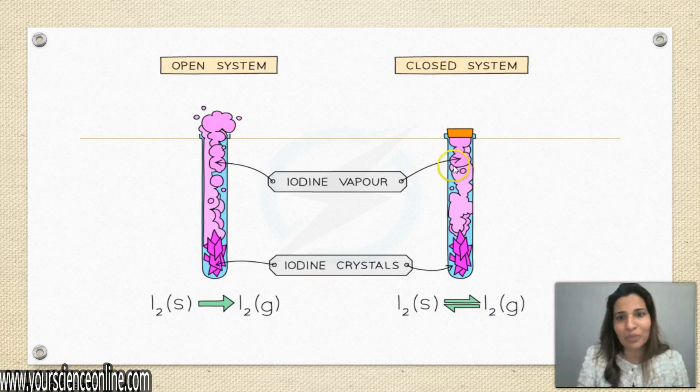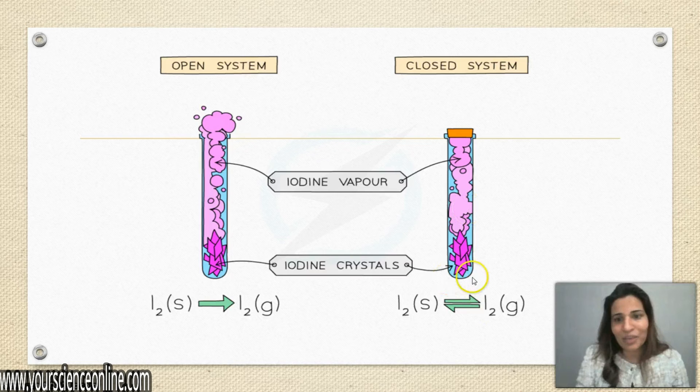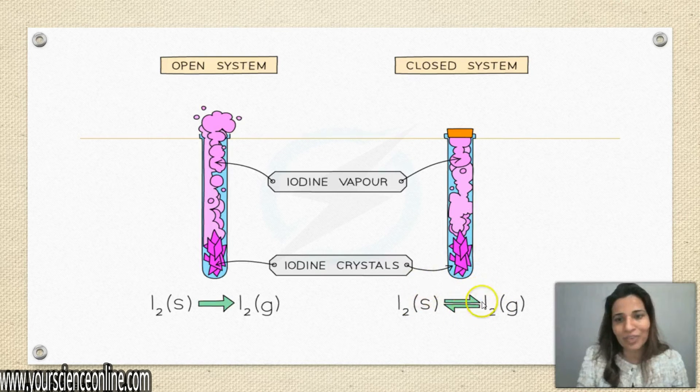In a closed system, iodine vapor cannot escape from here. That is why we say in a closed system, it is shown by the reversible reaction equilibrium.